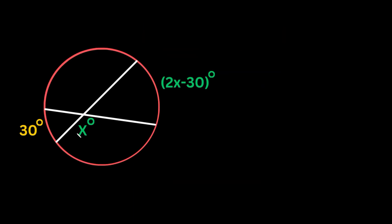Here's the last example with two chords. We have missing angle X, a missing arc measure of 2X minus 30 degrees, and we're given an arc measure of 30 degrees. Since X and the blue angle are along a straight line, they're supplementary — they add up to 180 degrees. So we can write the blue angle as 180 minus X degrees. For example, if X were 50 degrees, this angle would be 180 minus 50, or 130 degrees.